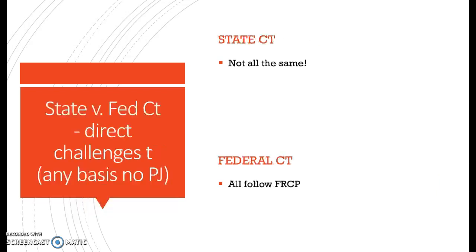Now let's think about direct challenges to PJ in terms of where you do it — in state or federal court. With a direct challenge, it could be any basis, not just that it's unconstitutional. It could also be that there was no PJ because the defendant didn't fall within the state's long arm. So any reason that there is no personal jurisdiction over the defendant, you can bring up. The rules for direct challenges in state and federal court are a little bit different. State courts are not all the same — each state is its own sovereign, so they have different rules.